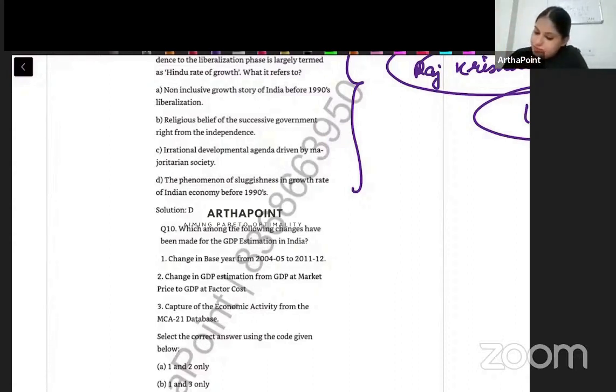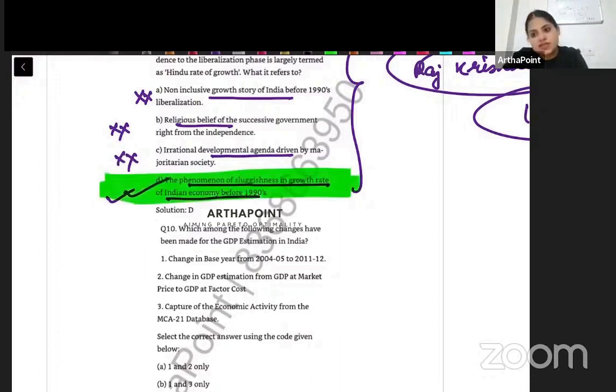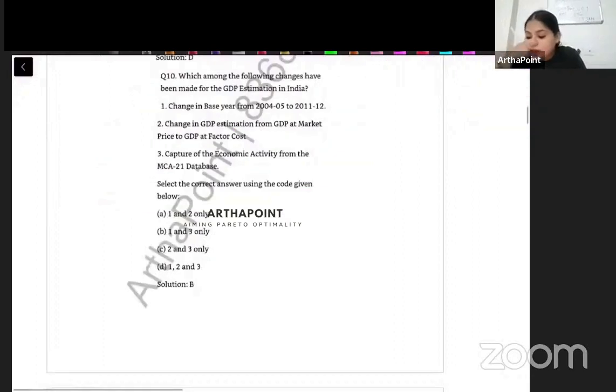Many students get confused thinking it's a religious belief or something. No, it is not related to any religion. This is just saying that the rate of growth was very low. That's it. So non-inclusive growth story - no. Religious belief - no. Irrational development agenda - no. The phenomenon of sluggishness in the growth rate - yes. So answer to this question is D. That the rate of growth was very, very slow.